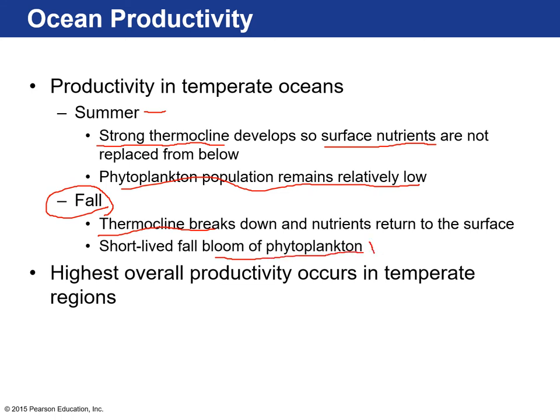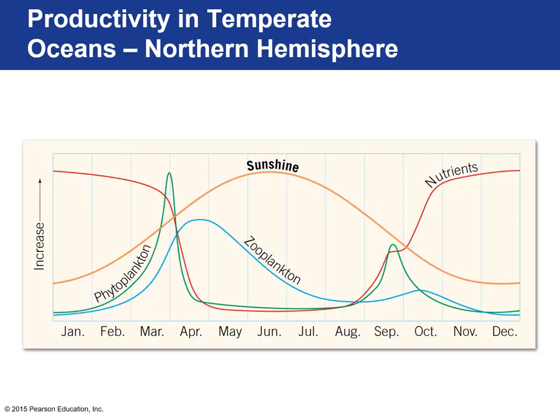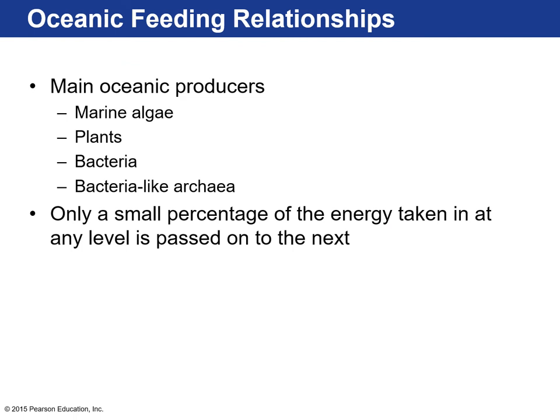The highest overall productivity occurs in temperate regions. Over the course of a year: solar radiation rises in summer and decreases in fall/winter; primary productivity peaks in spring, declines in summer, has a small fall bump, then drops in winter; nutrients are available in winter, decrease in spring, hit a low in summer, bump slightly in fall, then increase in winter. Zooplankton populations lag behind the primary-producing algae population.